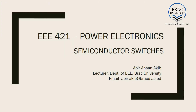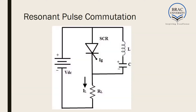Hello, in the fifth lecture, we will learn about more ways of force commutation. Now, Class B commutators or resonant pulse commutation. There are two circuits for resonant pulse commutation.